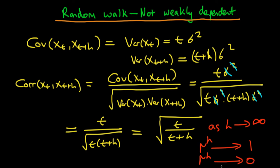So we very much have a process which is not weakly dependent. That's another reason for not including random walk processes in linear regression.